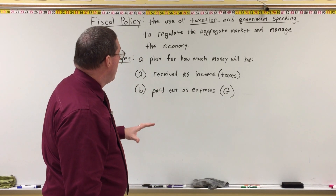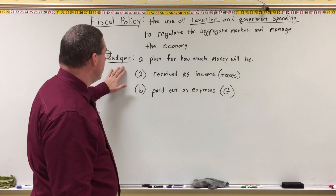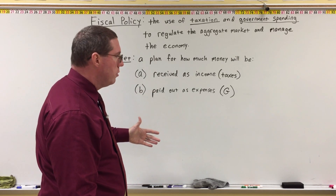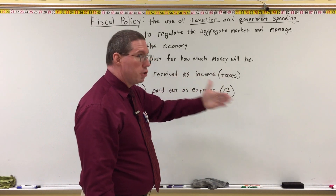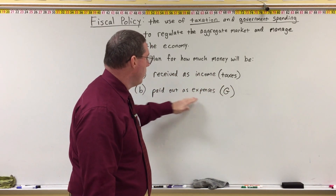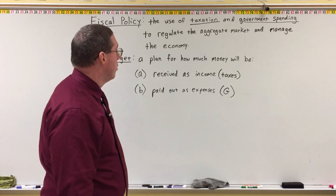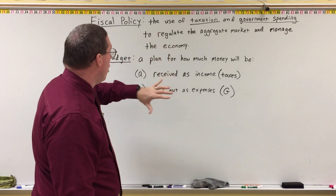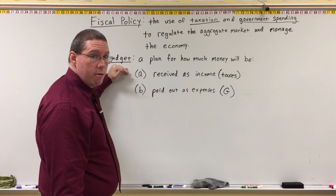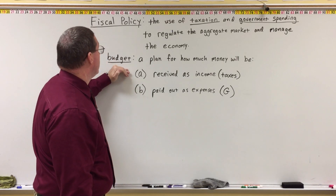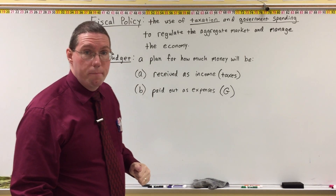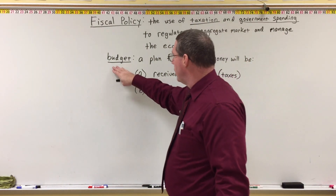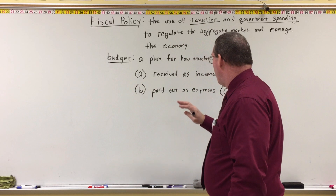The federal budget really only has two things going on: how are we going to get the money and how much, and how are we going to spend the money and how much. Because Congress controls the federal budget, they can affect the economy through it — and we call that fiscal policy. Now there are three situations that the budget can experience.